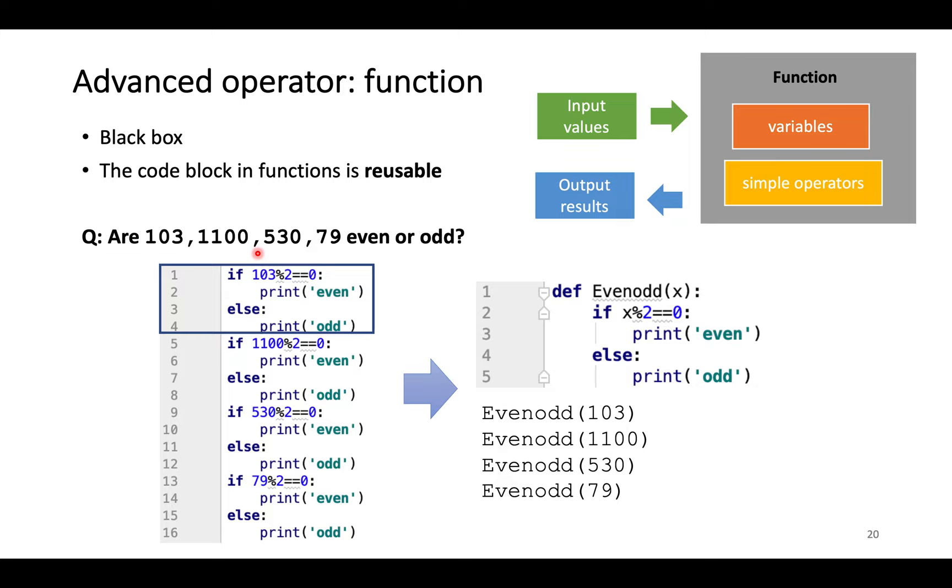For example, to decide whether four numbers are even or odd, using simple operators, we have to repeat the first four lines many times for different numbers. If we want to evaluate 100 numbers, we have to write 400 lines of code. But the even-odd function enables reusing the code. To use the function, we only need to specify the input value.